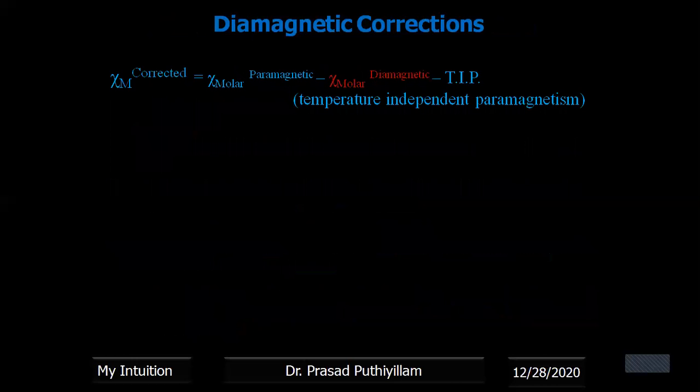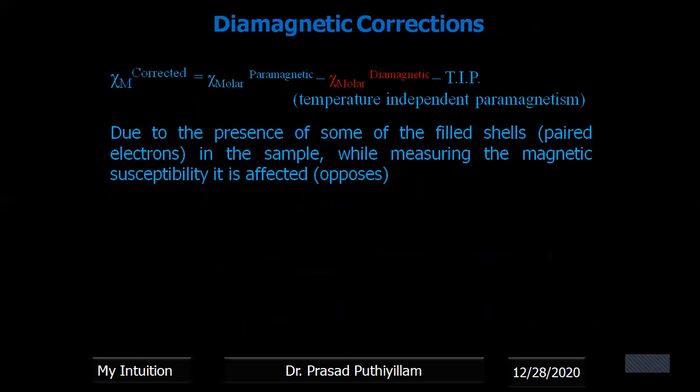Diamagnetic correction: while calculating the corrected mass magnetic susceptibility, we discussed about the diamagnetic correction. So what is the diamagnetic correction? It's the presence of some filled shells. When you write the electronic configuration, we come to know that there are so many electrons which are paired.